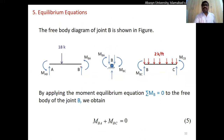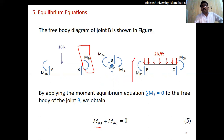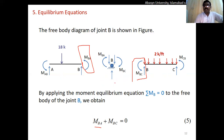The equilibrium equation at support B states that M_BA plus M_BC must equal zero. The beam is stable only when these moment values are equal in magnitude but opposite in direction. If they are not equal, they will cause rotation or bending in the beam.